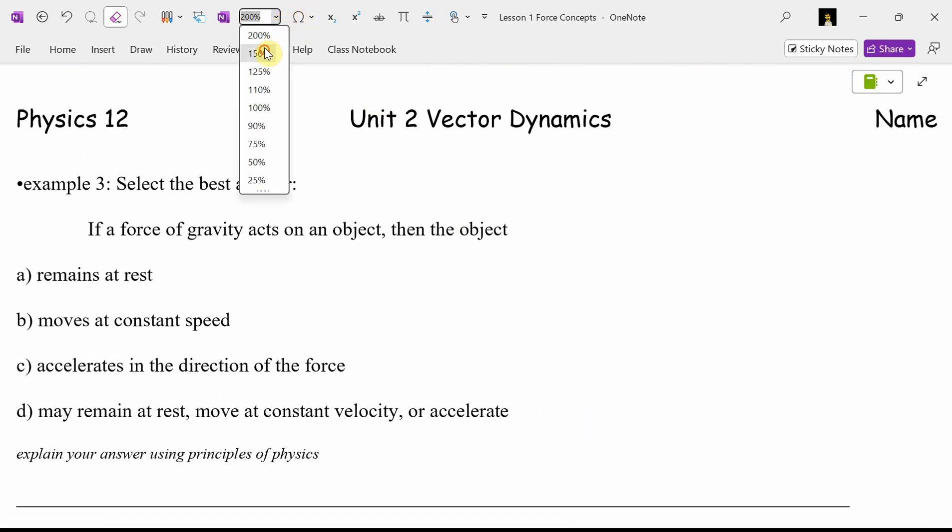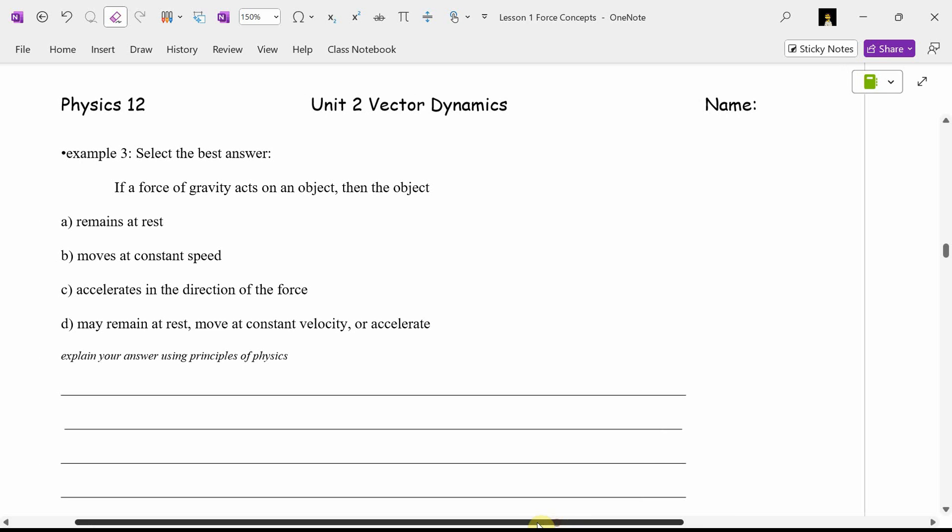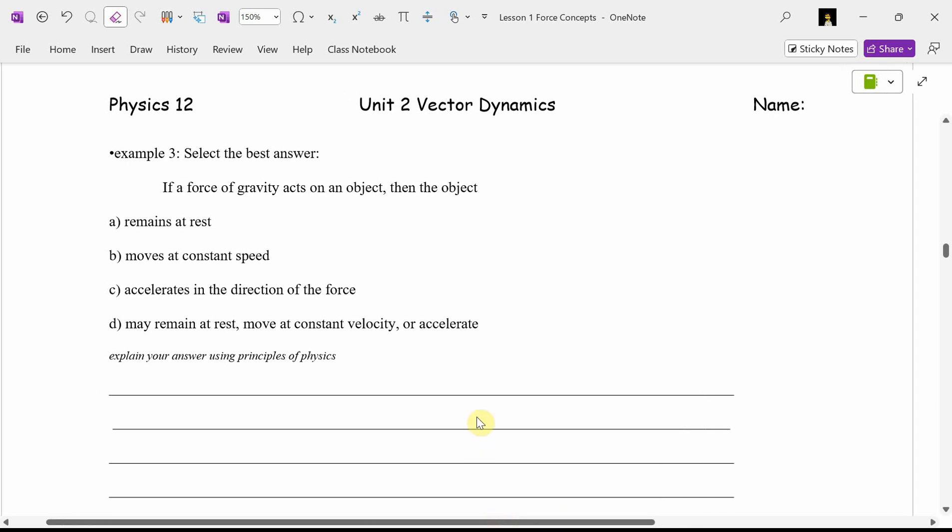We have a thought puzzle. Read along with me. It says this. Select the best answer. If a force of gravity acts on an object, then the object A remains at rest. B moves at a constant speed. C accelerates in the direction of the force. Or D, all of the above. Or D may remain at rest, move at a constant velocity, or accelerate. Once again, we're going to vote. Hold your hand high if you're not sure of the answer.